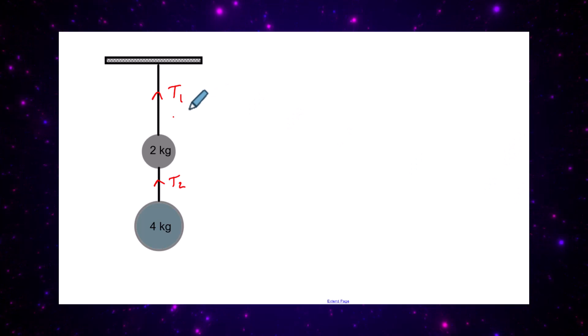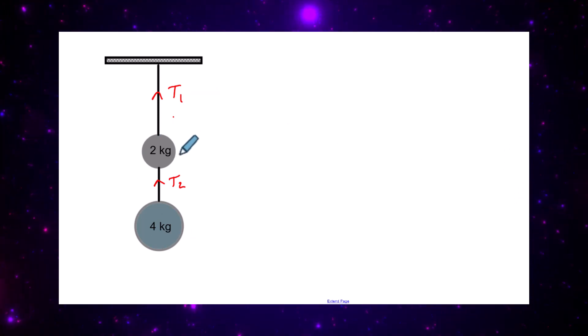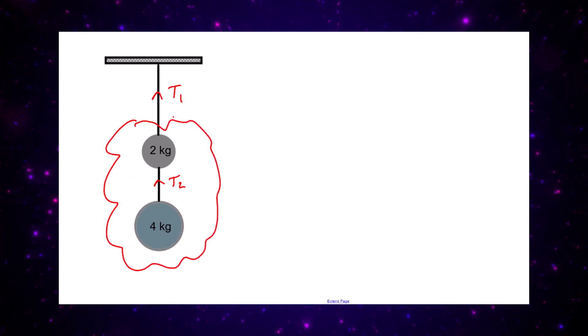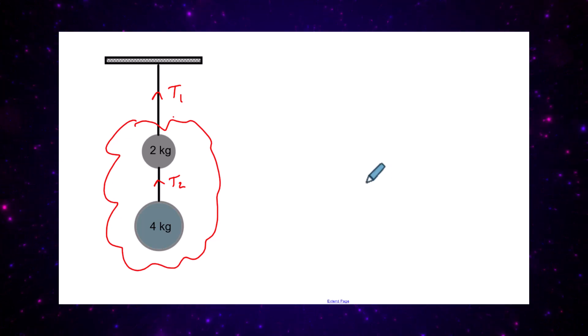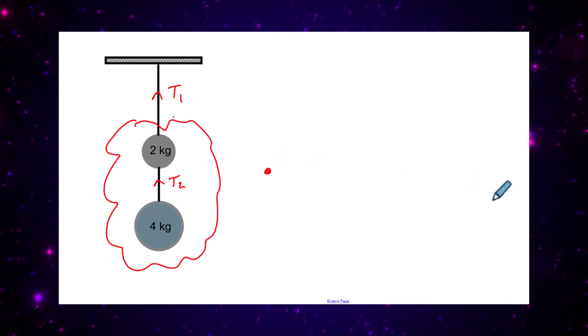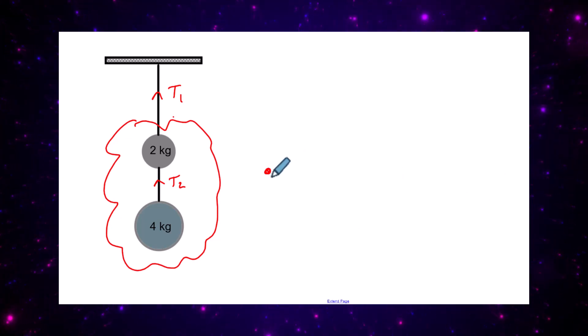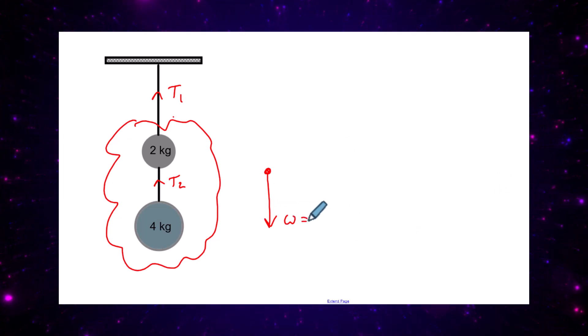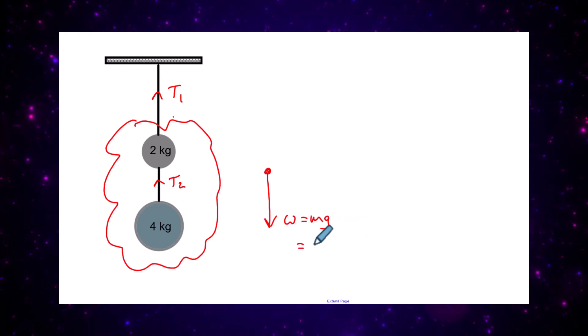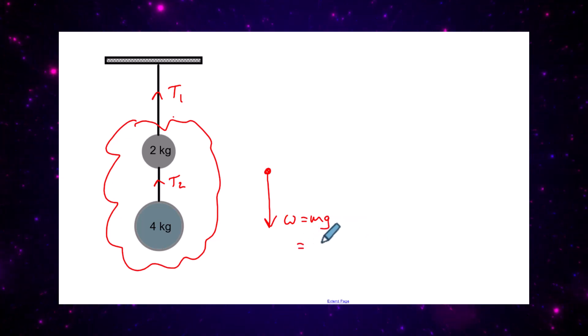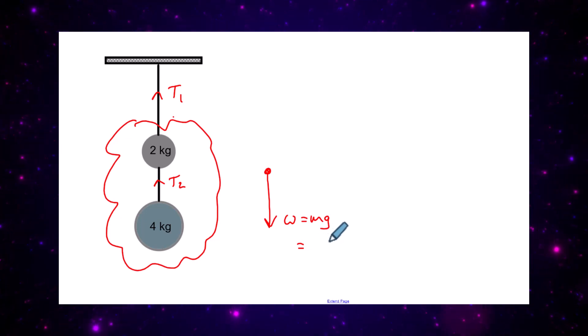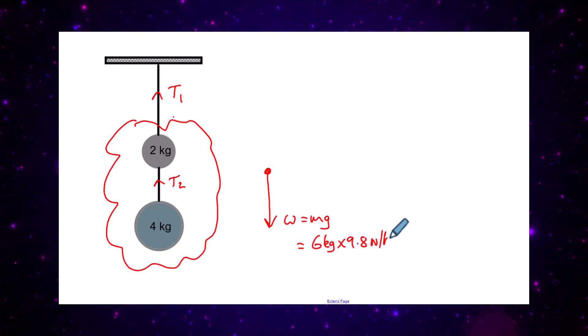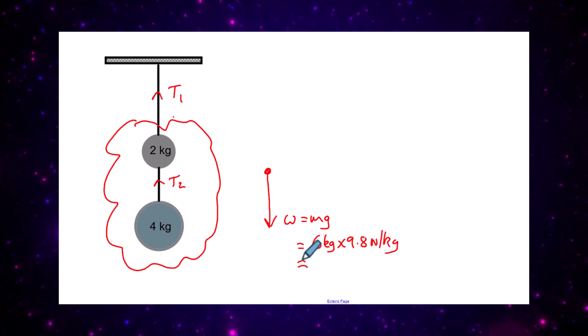We would isolate or join together these two balls to give a total mass of six kilograms, and that dot would represent the combined mass of these two balls. The weight force acting downward would be weight equal to mg, and that's going to be simply equal to the total mass below that tension: six kilograms times 9.8 newtons per kilogram.